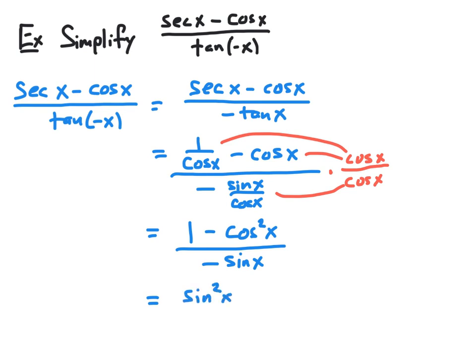The 1 minus cosine squared in the numerator simplifies to sine squared of x by the Pythagorean identity. Dividing sine squared x by negative sine x, one of the sines cancels, and we end up with negative sine x as our simplified expression. So secant x minus cosine x all over tangent of negative x simplifies to negative sine x.